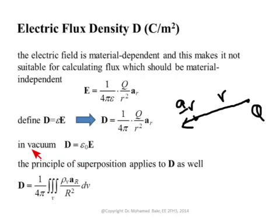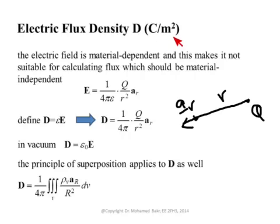In vacuum, epsilon is equal to epsilon-naught, which is 1 over 36π times 10 to the minus 9. Everything we have derived for the electric field can be applied here as well. If you have a volume with volumetric charge density ρ_V, you divide it into small differential elements each with charge dQ = ρ_V dV, then apply Coulomb's law and integrate over the volume to get the total electric flux density vector D. D has units of coulombs per meter squared, so when you integrate it over an area you get coulombs.